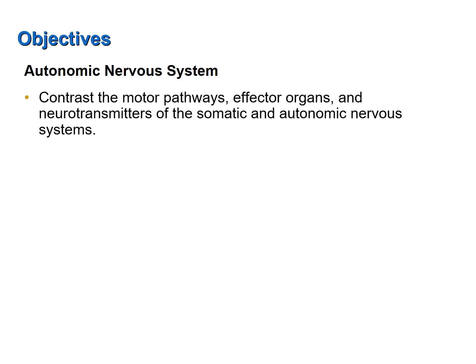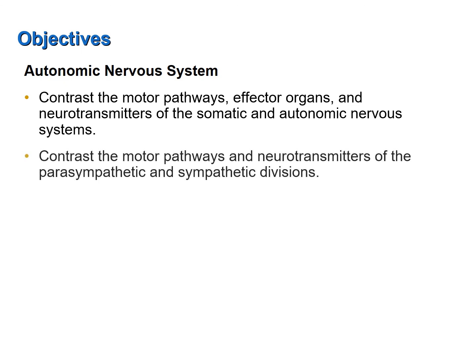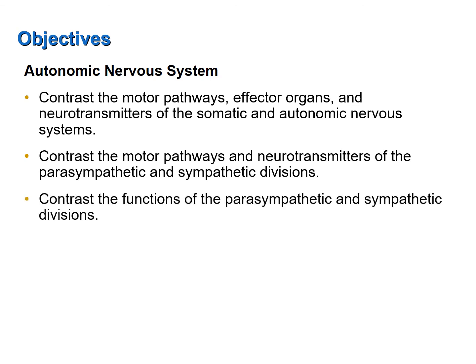Now let's review the objectives of this screencast: contrast the motor pathways, effector organs, and neurotransmitters of the somatic and autonomic nervous systems; contrast the motor pathways and neurotransmitters of the parasympathetic and sympathetic divisions; and contrast the functions of the parasympathetic and sympathetic divisions.